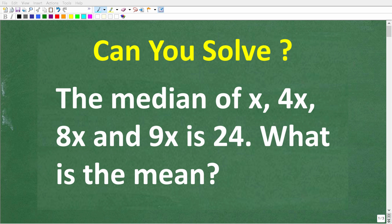If you understand basic statistics and a little bit of algebra, you should have no problem solving this word problem. Let's take a look at the question. So the median of x, 4x, 8x, and 9x is 24. What is the mean? Alright, so feel free to use a calculator.